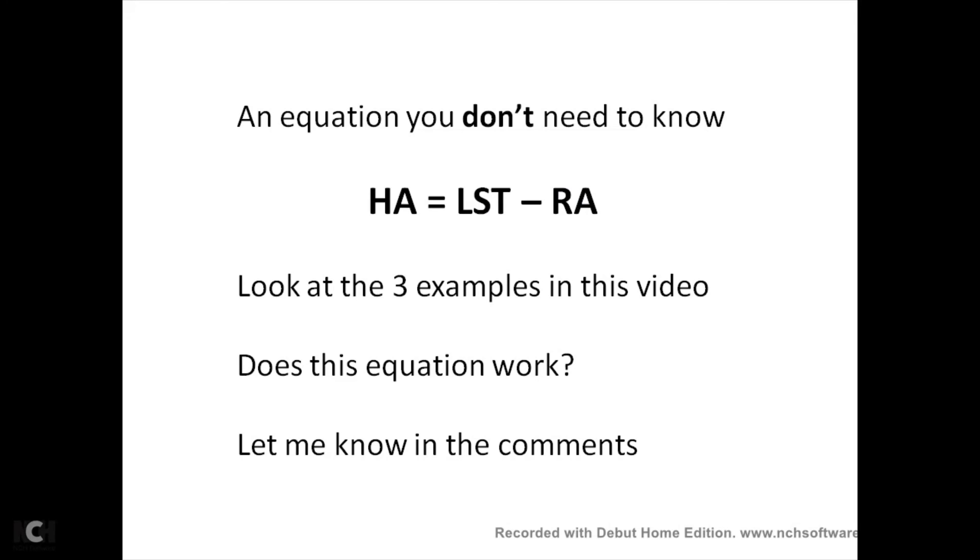Now here's an equation which, touch wood, I don't believe you need to know. It's not on the specification. However, obviously there's a relationship between the hour angle of a star and your local sidereal time and the right ascension of the star. And I've read on several websites that the hour angle equals your local sidereal time minus the right ascension of the star: HA = LST - RA.